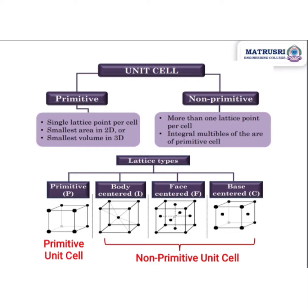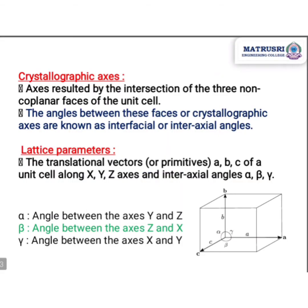In this slide, the first one is a primitive unit cell where you can see the lattice points only at the corners. The remaining three — body-centered, face-centered, and base-centered — are called non-primitive unit cells, because along with the corner atoms there are extra atoms at the body-centered position, on the six faces, and at the base.